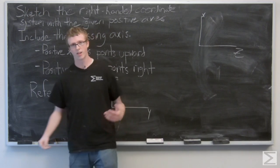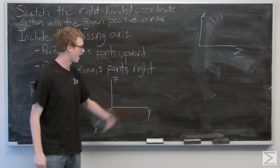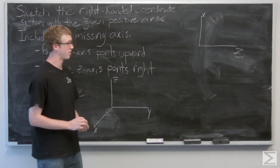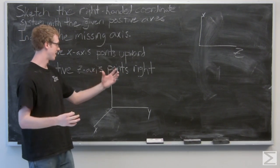Alright, so now our last thing to do here, a pretty simple problem, is just to figure out where that y-axis might go. Now, your best bet is to use the right-hand rule, but that's a little bit difficult to see. So we're going to kind of imagine the coordinate system twisting itself around.